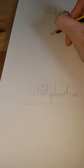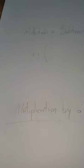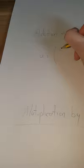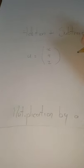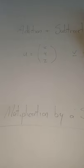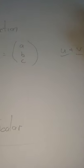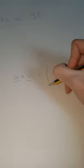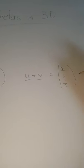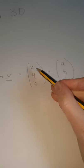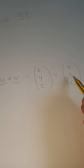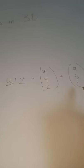Starting with addition and subtraction. If I have a vector u with components x, y, and z, and another vector v with components a, b, and c, to work out u plus v, all we do is add together those components: x plus a, y plus b, and z plus c. Just like we did in two dimensions.